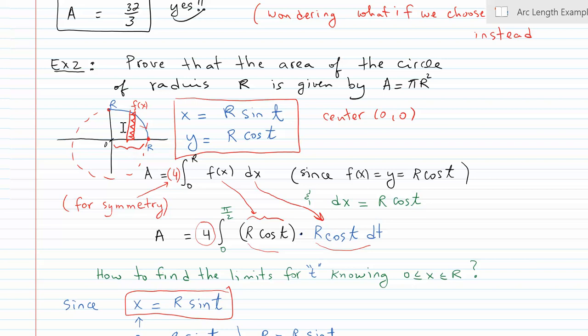Top minus bottom gives f(x) minus 0, which is simply f(x). Since I'm integrating from 0 to r, that only gives me the area in quadrant 1. You can see that I'm multiplying the entire integral by 4 for symmetry to get the full circle.